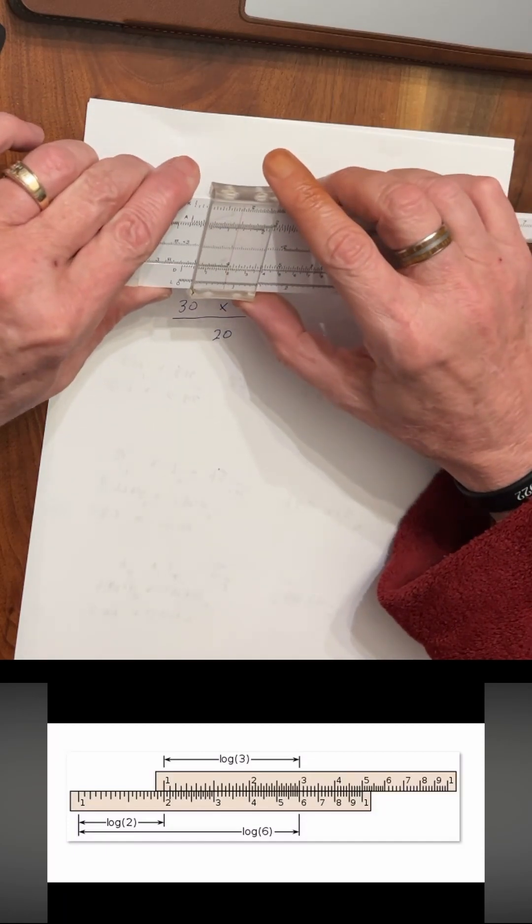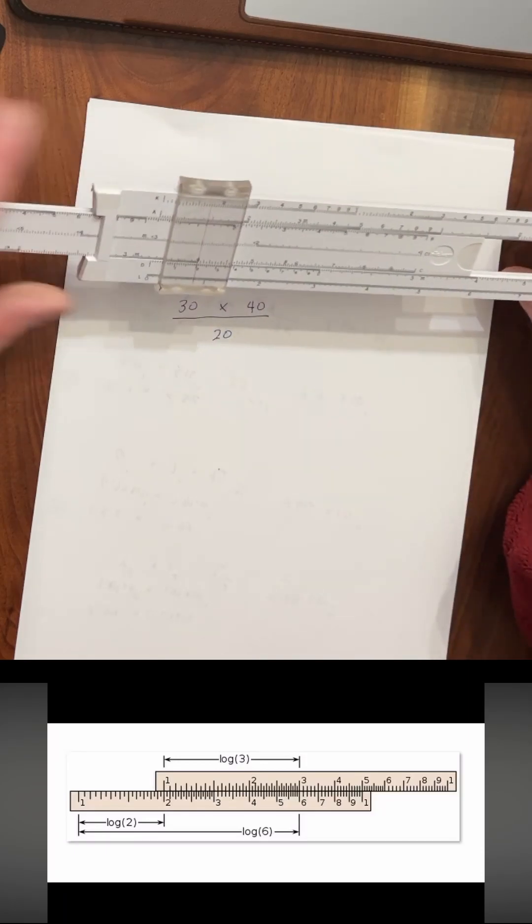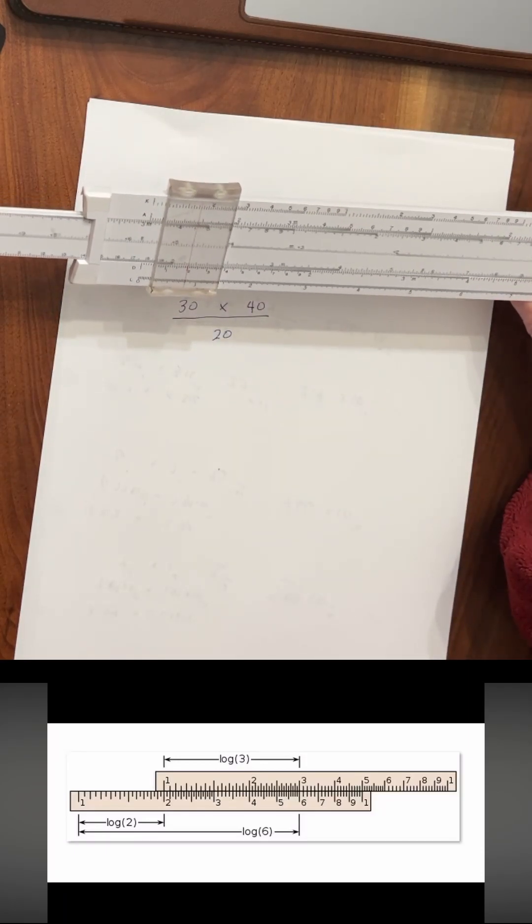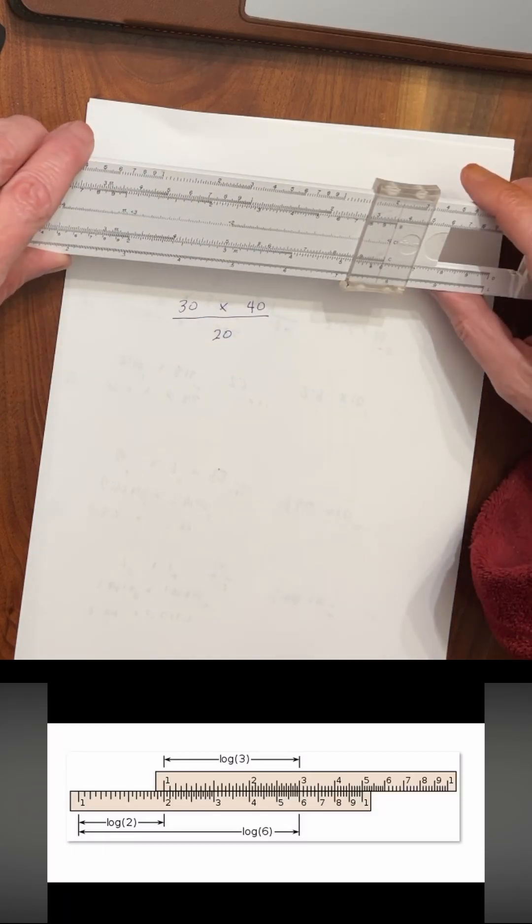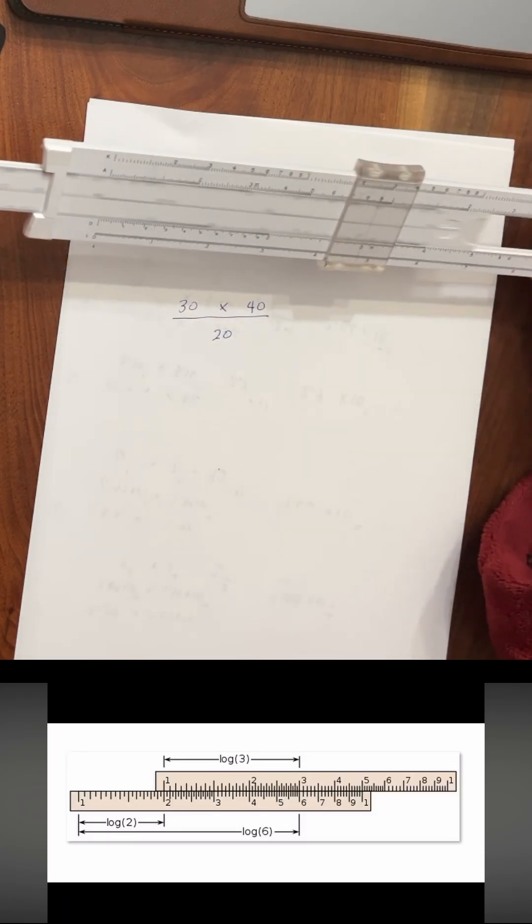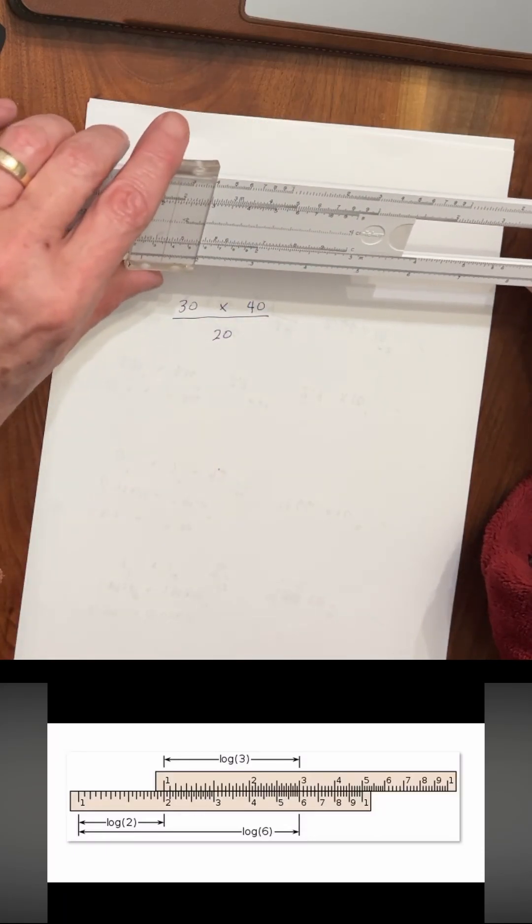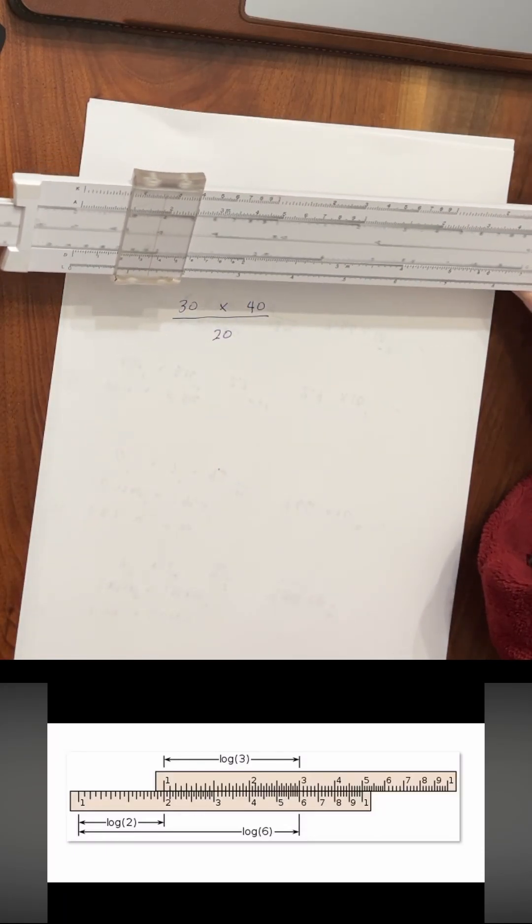We move the cursor down to 40. And then we put the 20 over our answer. And we read out here to 60. 1, 2, 3, 4.